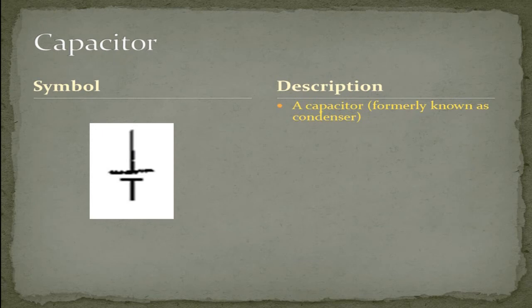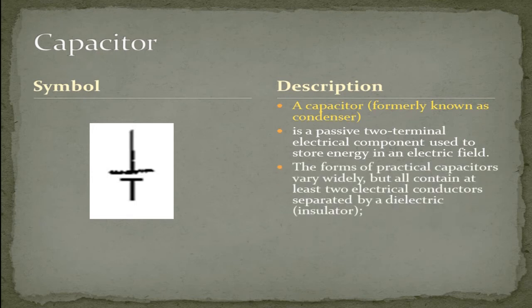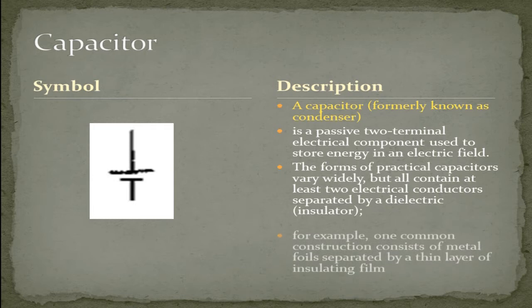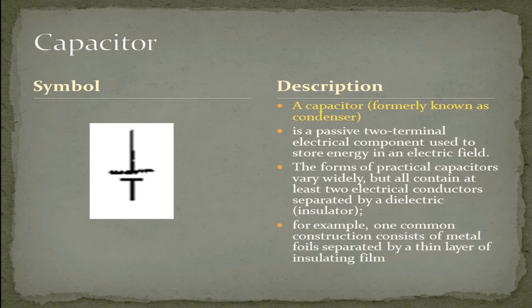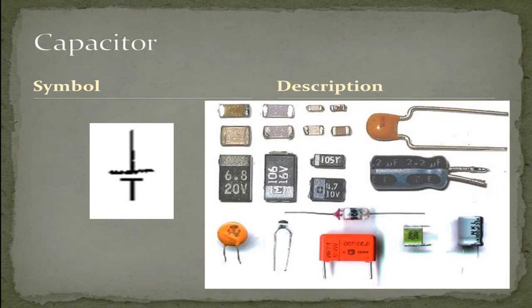A capacitor, formerly known as a condenser, is a passive two-terminal electrical component used to store energy in an electric field. The forms of practical capacitors vary widely, but all contain at least two electrical conductors separated by a dielectric insulator. For example, one common construction consists of metal foil separated by thin layers of insulation film. Here are some common pictures of capacitors.